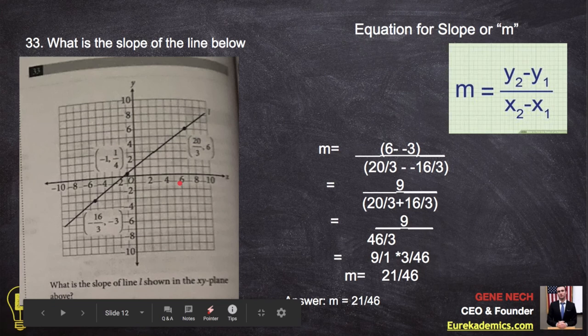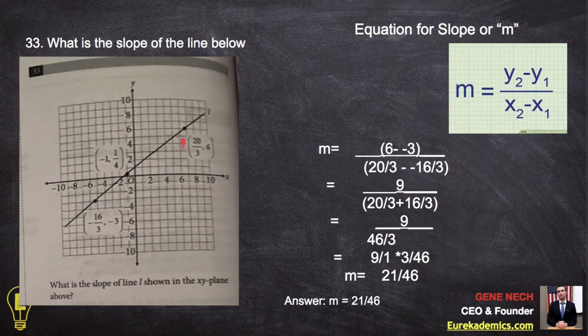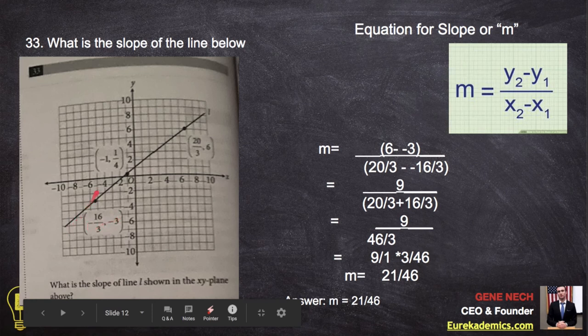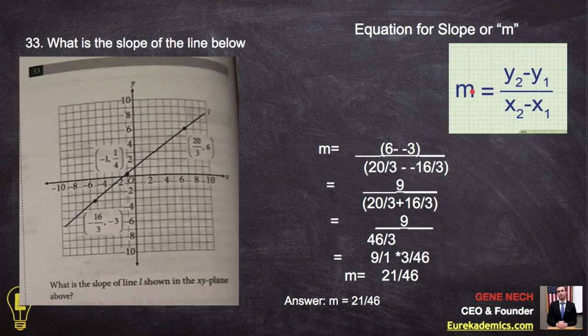Number 33. What is the slope of the line below? In order to find the slope, you're going to need two points, especially with a line. So I'm going to take this point and this point. This will be the first point, and I'm going to use the second point. The equation for slope, and slope is often defined as m, is y2 minus y1.